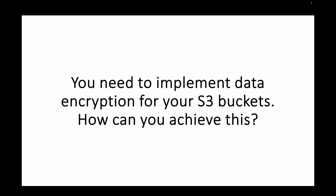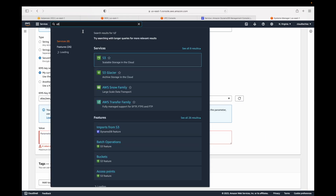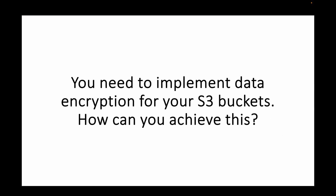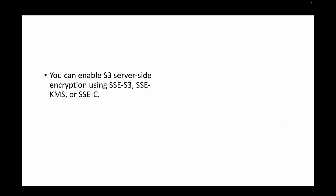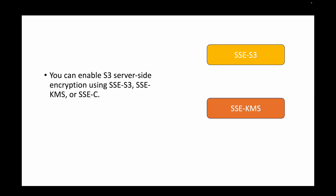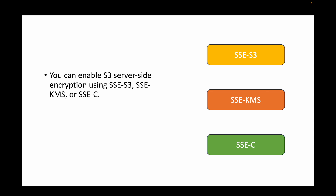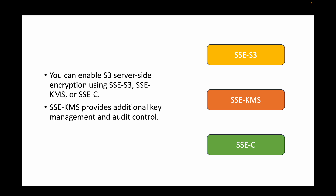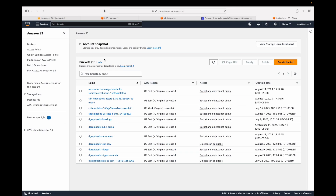The next question: you need to implement data encryption for your S3 buckets — how can you achieve this? You can enable S3 server-side encryption (SSE). You have three options: SSE-S3 using S3-provided encryption keys, SSE-KMS using the KMS service, or customer-provided encryption keys. SSE-KMS provides additional key management and audit control.